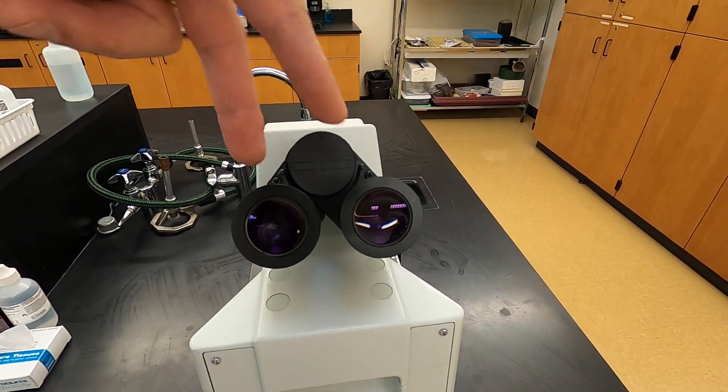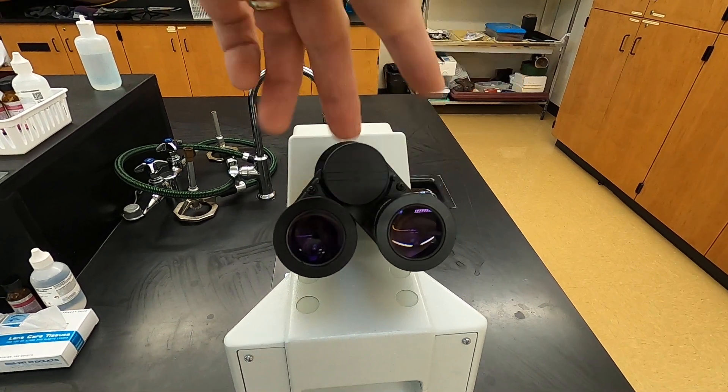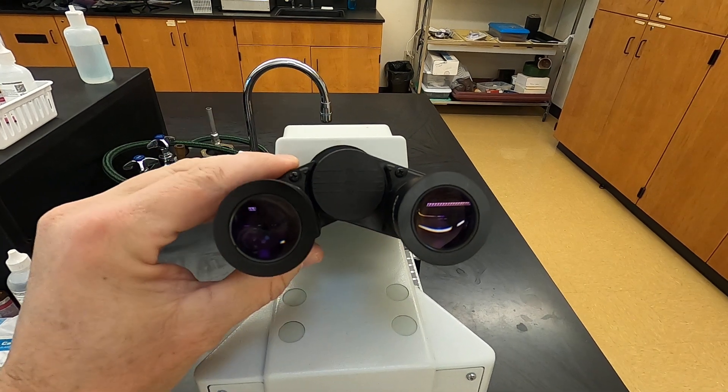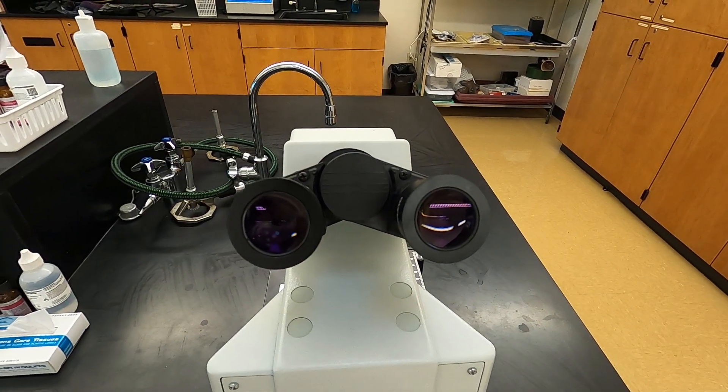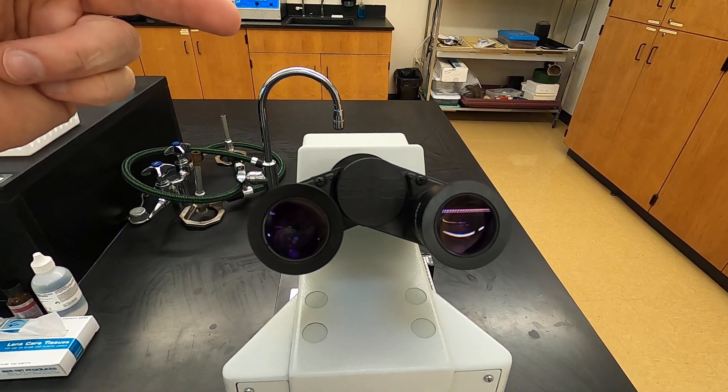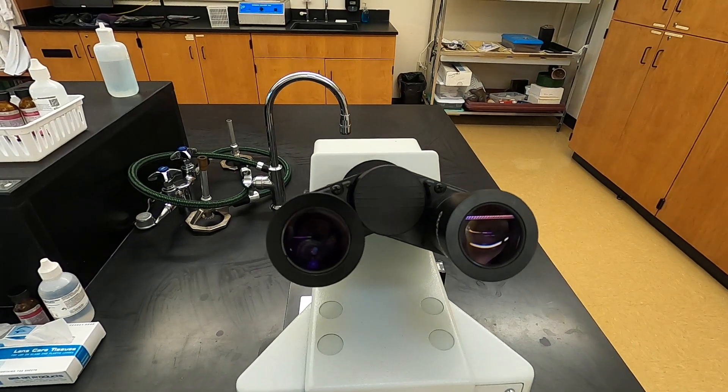Here you can see the ocular lenses. There's two ocular lenses on this compound microscope, and we can move the distance between those ocular lenses. This is called adjusting for the interocular distance. No two people's eyes are the same distance apart, so we need to adjust for the interocular distance here. This takes a little bit of practice.